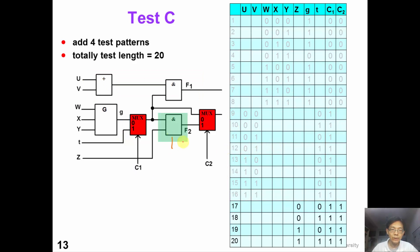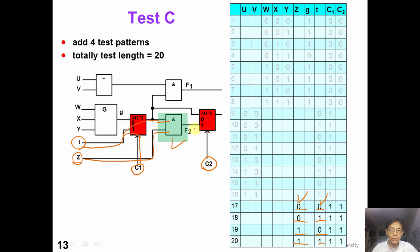Now we want to test segment C, which has two inputs: one internal input controlled by input T, and the other the original primary input Z. We apply four test patterns to test segment C exhaustively. Control signal C1 must be one to select T, and control signal C2 must be one so we can observe the function output F2. In this way segment C is tested exhaustively with four more test patterns. Totally we can test the circuit using 20 patterns, at the cost of area overhead from MUXes and additional control signals, but test generation is easier.